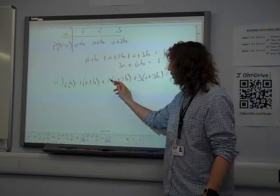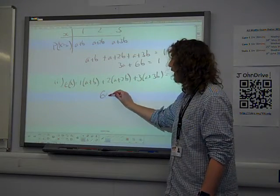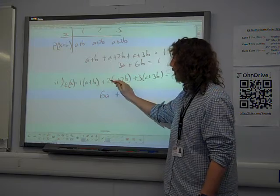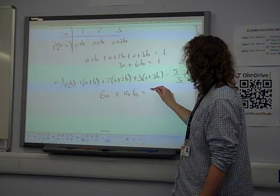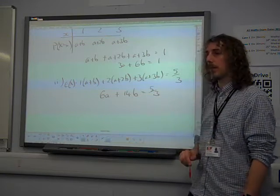So, this is 1a plus 2a plus 3a. That's 6a. 1b plus 4b plus 9b is 14b. It's 5 thirds.